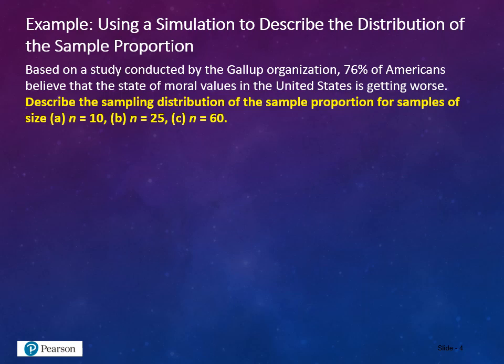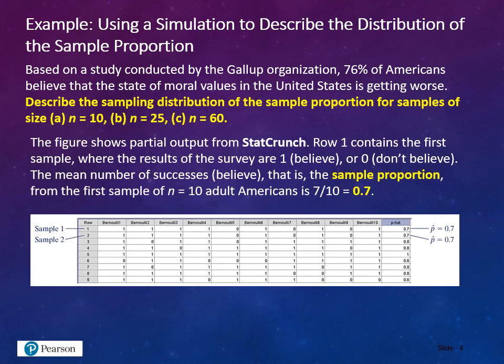Based on a study conducted by the Gallup organization, 76% of Americans believe that the state of moral values in the United States is getting worse. We'll describe the sampling distribution of the sample proportion for samples of size n equals 10, n equals 25, and n equals 60. The figure shows partial output from StatCrunch. Row 1 contains the first sample where results are 1 (believe) or 0 (don't believe). The mean number of successes — that is, the sample proportion from the first sample of n equals 10 — is 0.07. We're counting up the total number of people who believe moral values are getting worse, then dividing by n, which is 10, giving different proportions for each sample.